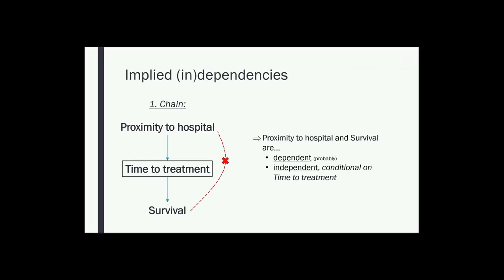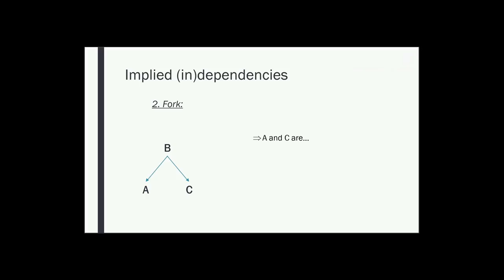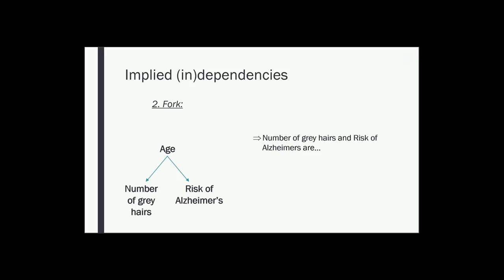The fork structure, in which B causes both A and C, implies that A and C are dependent but become independent when we condition on B. For example, consider the relationship between number of grey hairs and risk of Alzheimer's — we'd expect a positive association despite no direct causal connection, because both increase with age. However, if we condition on age — for instance, looking only at 65-year-olds — we'd find no association. This is the causal structure we mean when we talk about confounding: at least part of an association between two variables is spurious or non-causal, and to remove that spurious component we condition on their common cause.